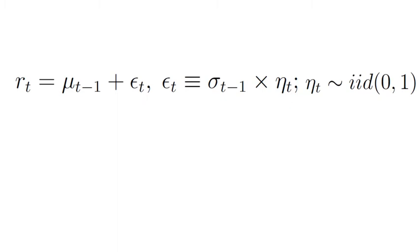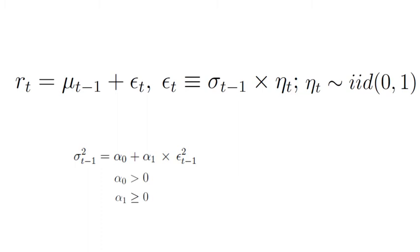Turning to point number 1: an ARCH1 model assumes the following parametrization for the conditional variance of prediction errors. In the unconstrained form, the parameters alpha_0 and alpha_1 must fulfill the restrictions that alpha_0 is positive and alpha_1 is zero or positive. Looking at the ARCH1 parametrization, you notice that return variance is assumed to rise linearly in the most recent statistical return shock.